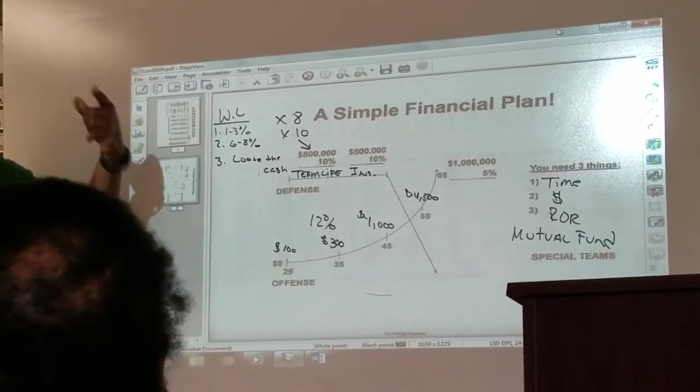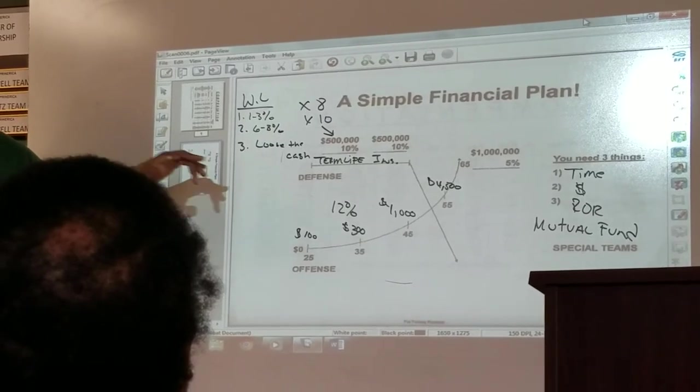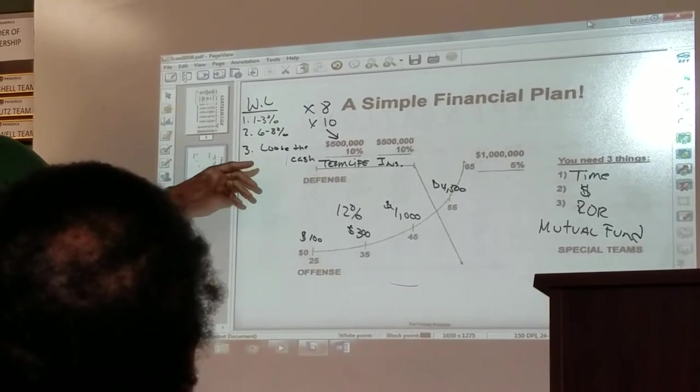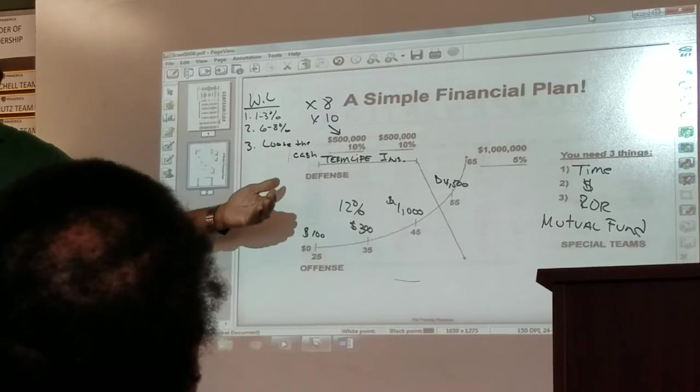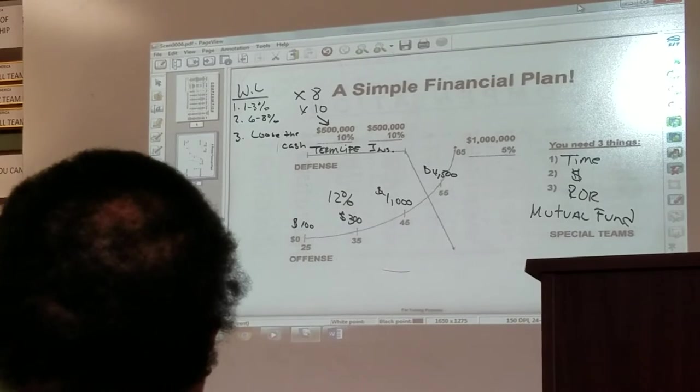So in essence you're paying for two things, which is what Stacy said, but you're only getting one. Because if you die, your beneficiaries get what? They don't get the death benefit and the cash savings. We'll talk more about that as you go through.